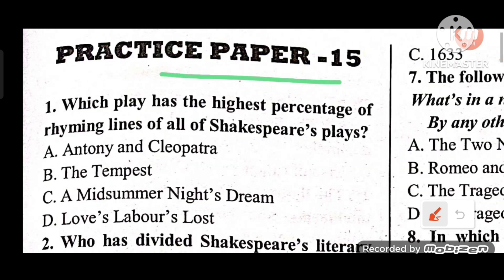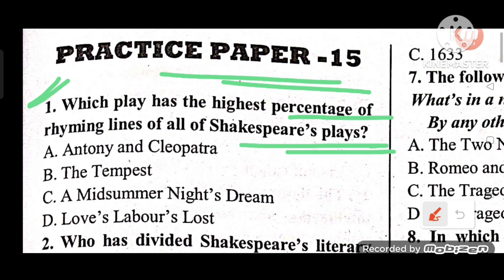Question 1: Which play has the highest percentage of rhyming lines of all of Shakespeare's plays? Options: A) Antony and Cleopatra, B) The Tempest, C) A Midsummer Night's Dream, D) Love's Labour's Lost. The answer is D — Love's Labour's Lost has the highest percentage of rhyming lines of all of Shakespeare's plays.